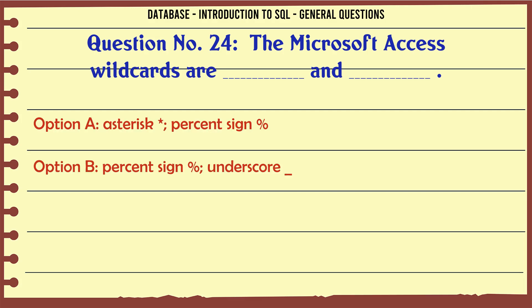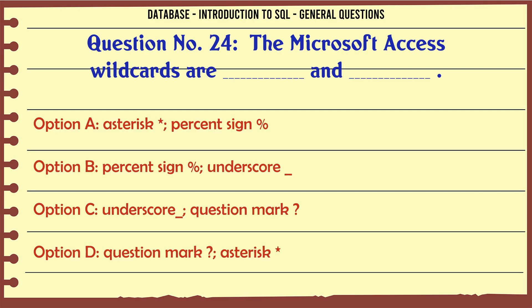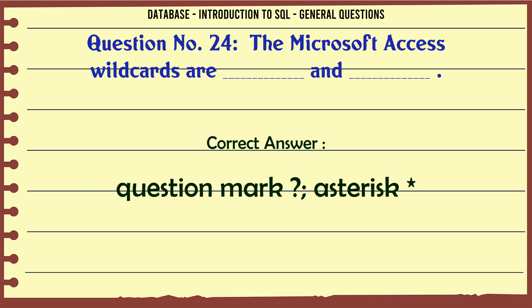The Microsoft Access wildcards are: A. Asterisk, percent sign. B. Percent sign, underscore. C. Underscore, question mark. D. Question mark, asterisk. The correct answer is: question mark, asterisk.